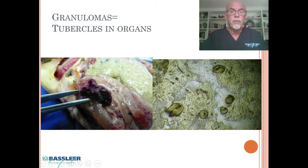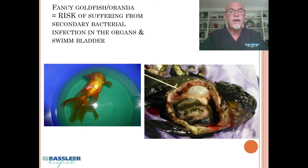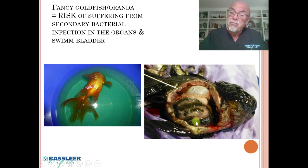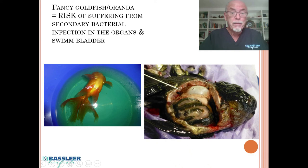Depending on where the tuberculosis lesions are and which organs are deformed, there can be a lot of impact. Fancy goldfish are also at risk of secondary bacterial infections, which can also affect the swim bladder. In a case study on a black lionhead goldfish, the swim bladder is visible but the kidney is very enlarged and thick — badly infected with tubercles and bacteria, possibly mycobacterium. This bacterial infection is a common problem.